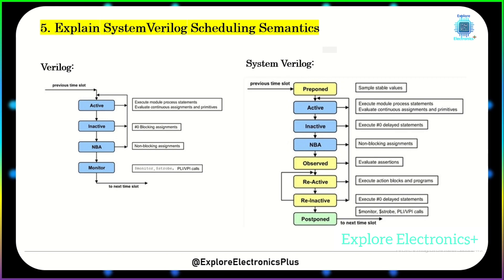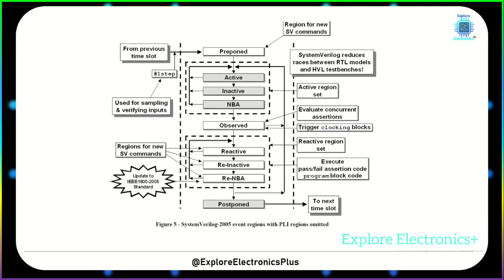In the active, inactive, and NBA regions — same as Verilog — execution occurs as usual. In the reactive region, assertions are evaluated, action blocks and program blocks are executed, and zero-delay statements are executed. At the end, $monitor, $strobe, and PLI/VPI calls are executed in the postpone region.